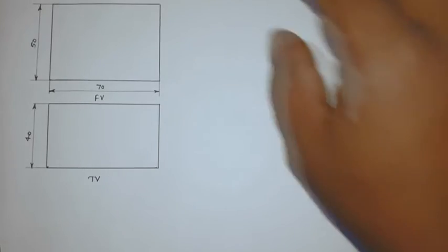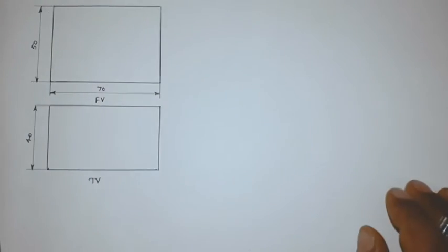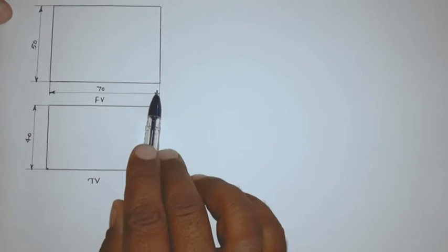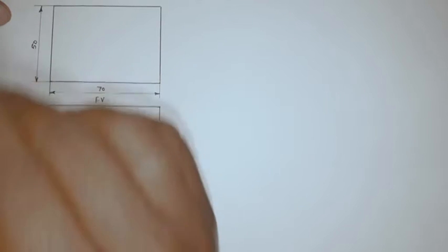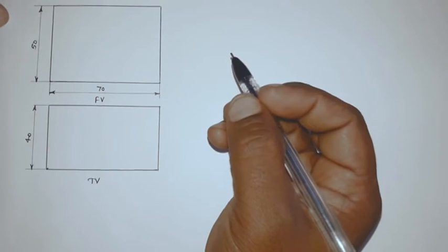Welcome students, this is my very first lecture on isometric projection. So in the beginning, suppose this is a component in which the length is given 70mm, the height is given 50mm, and the width of this component is given, that is 40mm.